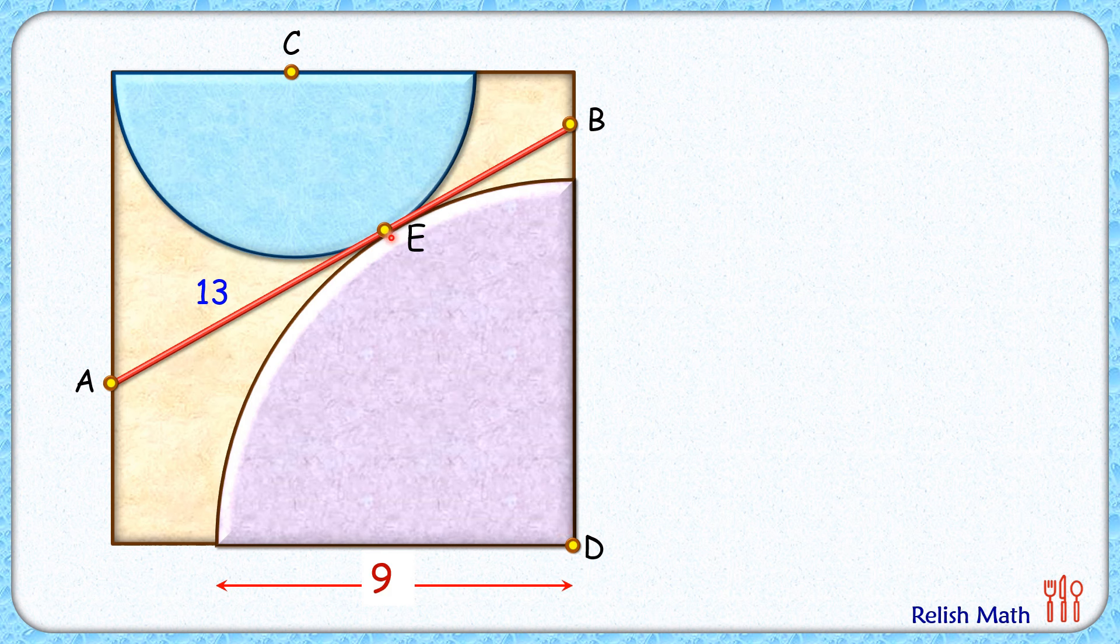Also, AB is tangent and tangent is perpendicular to the radius, thus this angle here is 90 degrees. So now in a square, when two line segments are perpendicular to each other, they are equal in length.